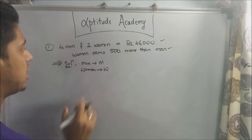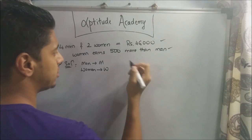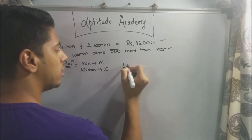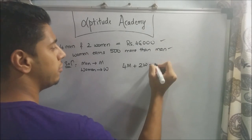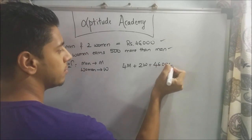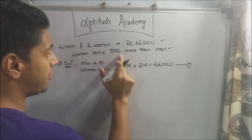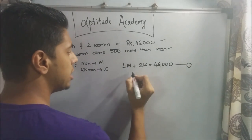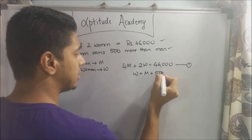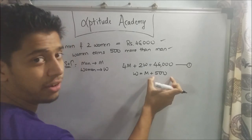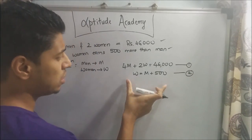If you rewrite these equations, you will get: four men plus two women equals 46,000 rupees — so 4m + 2w = 46,000. This is equation one. From the second statement, a woman earns 500 rupees more than a man, so w = m + 500. This is equation two.